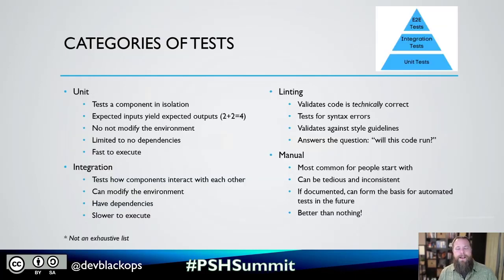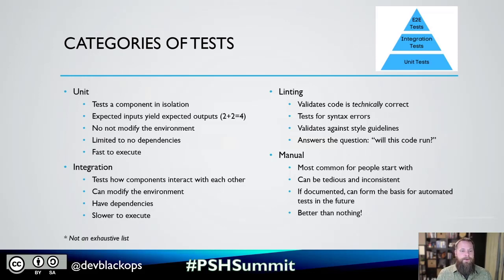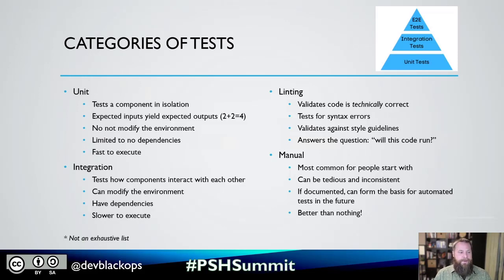Let's talk about the high-level categories of tests. At the top left, we have unit tests — meant to be very basic, small, and fast tests that test a component of your application, or in this case your infrastructure, in isolation. Expected inputs yield expected outputs: 2 plus 2 equals 4. Unit tests should not modify the environment; they're meant to be run in isolation with limited to no dependencies on external things. If you're running a unit test, you can't expect all this external infrastructure to exist — they should be fast and cheap.